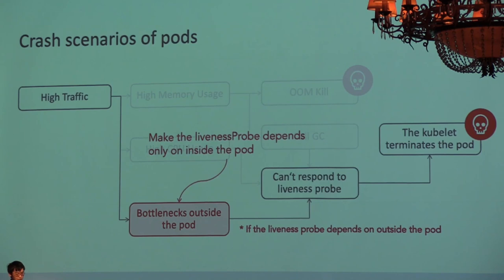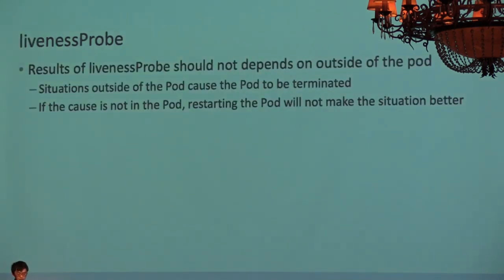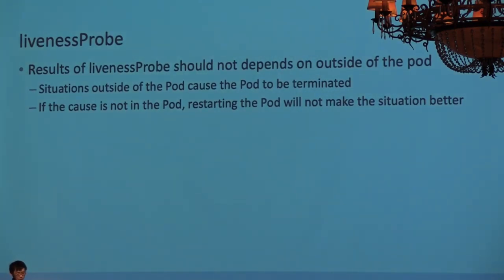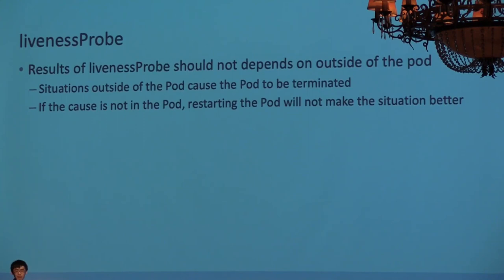It is also important not to make the liveness probe dependent on components outside the pod. For example, in the liveness probe, if you check the connectivity of a database that the application depends on, such a configuration will cause the pod to restart when the database is unstable, and will do little to improve the state of the database. In these cases, it is better that the pod stays running and requests to the pod result in an error. Circuit breakers may also be effective, so please consider them.